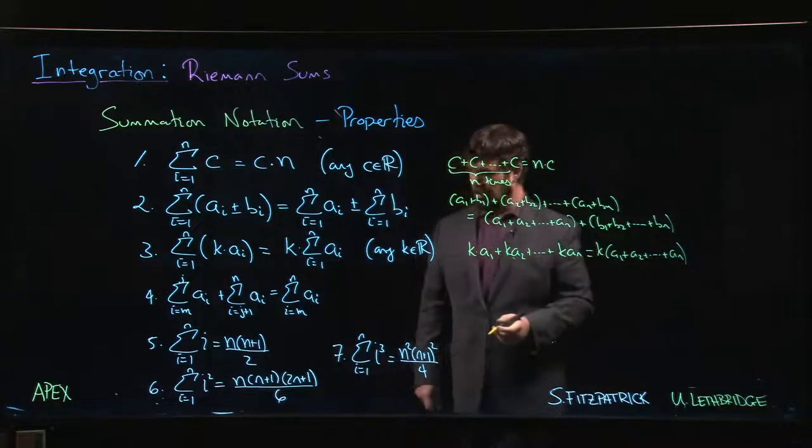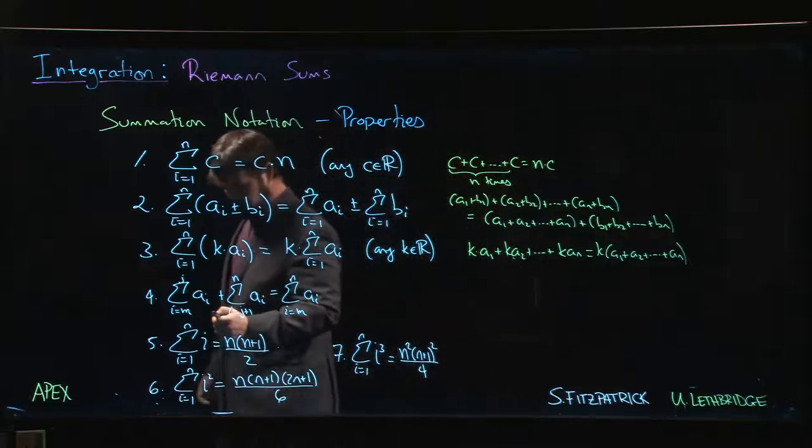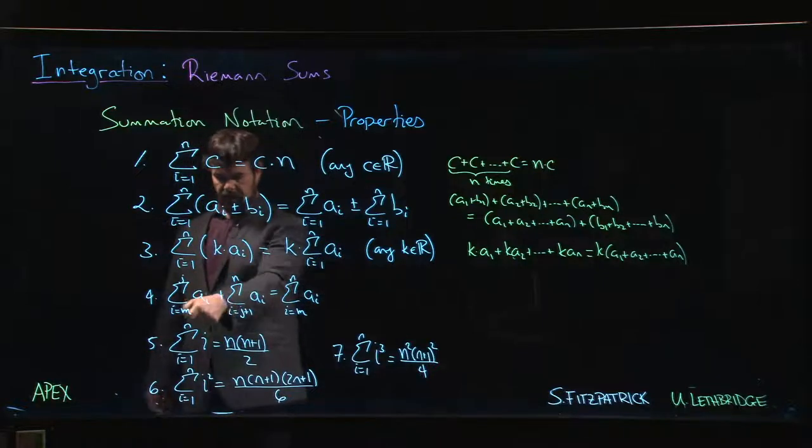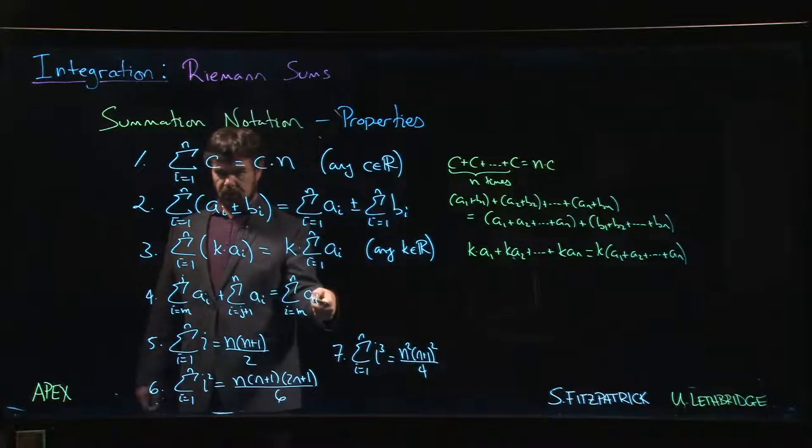Now this one here is a little bit trickier. Well, it looks really intimidating—look at all these: there's i, there's m, there's j, j plus one, n. So many symbols, right?